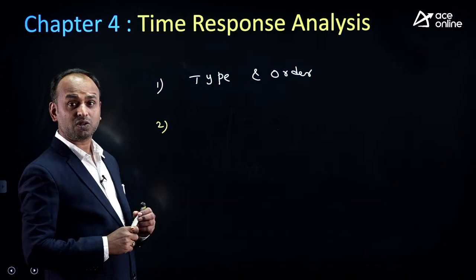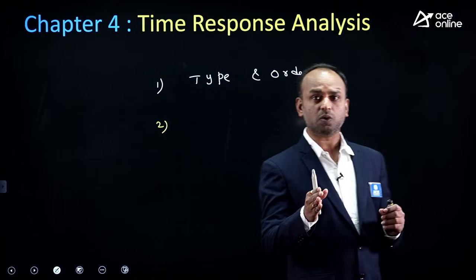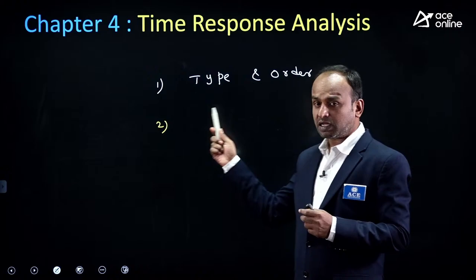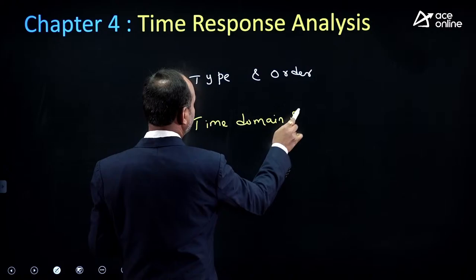For second order systems, classification by damping ratio ζ: ζ = 0 → undamped; 0 < ζ < 1 → underdamped; ζ = 1 → critically damped; ζ > 1 → overdamped. After this classification, we study time domain specifications for underdamped systems.